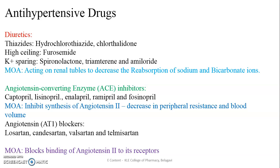Coming to antihypertensive drugs — there are different classes. For minimal hypertension, first-line therapy includes diuretics: thiazides such as hydrochlorothiazide and chlorothiazide (low ceiling diuretics), high ceiling diuretics like furosemide — which can remove up to 10 liters of water from the body — and potassium-sparing diuretics like spironolactone, triamterene, and amiloride. One side effect of diuretics is hypokalemia. All diuretics act on the renal tubules at different sites, decreasing reabsorption of sodium and bicarbonate ions.